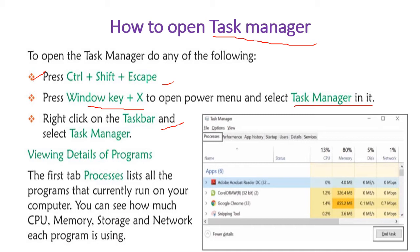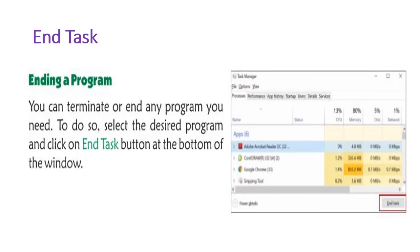When you open Task Manager, the Processes tab opens first. Here you can see all the programs currently running on your computer, along with their resource usage details. You can also see the 'End Task' option here.